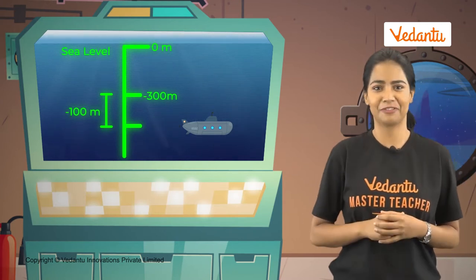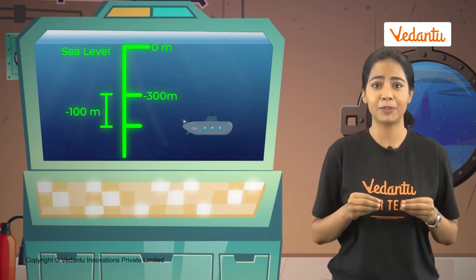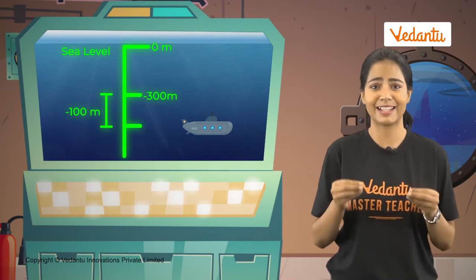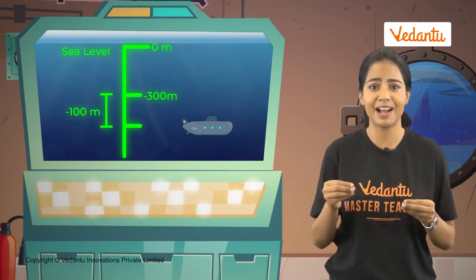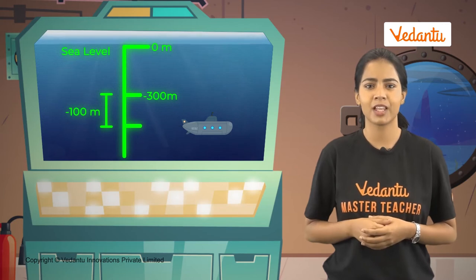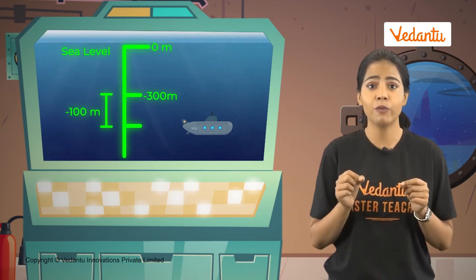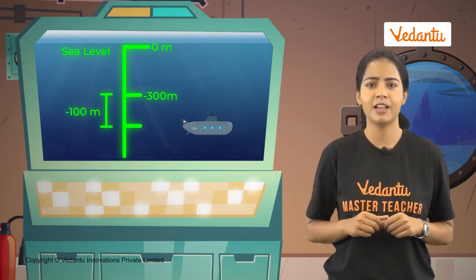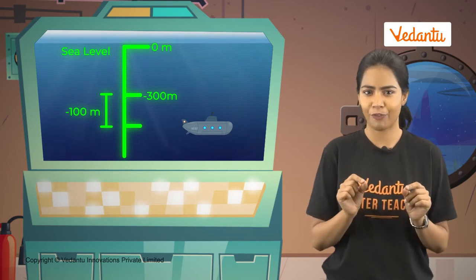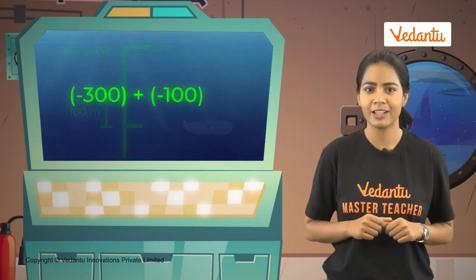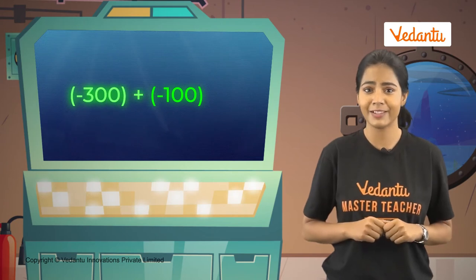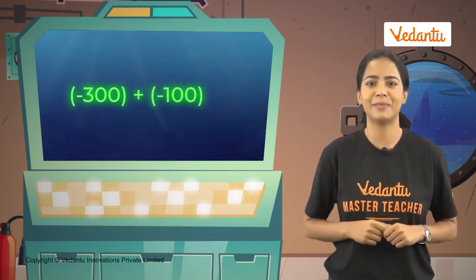In negative. So a depth of 300 meters can also be said as negative 300 meters or minus 300 meters. When I dove another 100 meters, the total depth increased. To find the total depth traveled, we need to add negative 300 meters and negative 100 meters.